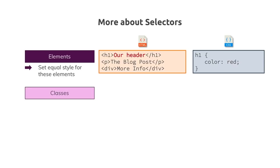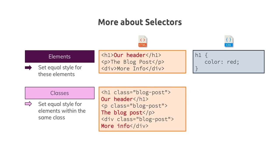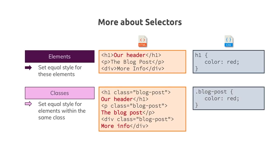We also have class selectors. Classes are a concept strongly connected to CSS — you define a style and apply it to all elements that share the same class. A class is added to an HTML element using the class attribute. The class name isn't predefined by the browser; you define it yourself. In CSS, a class selector starts with a dot followed by the class name, and all elements with that class get the declared style.